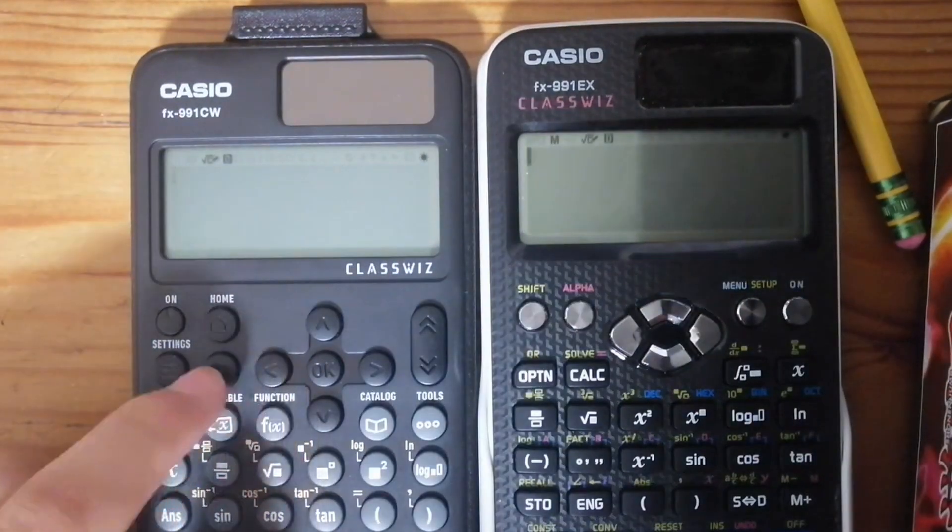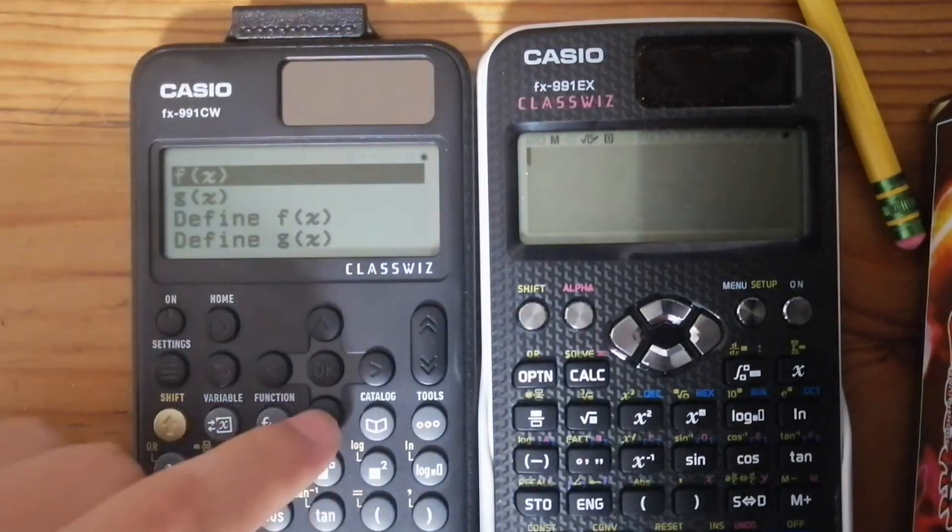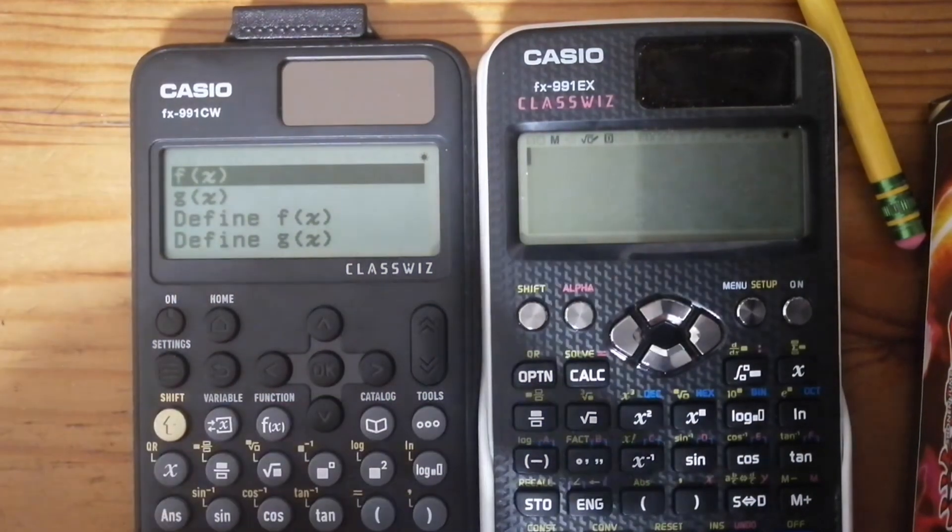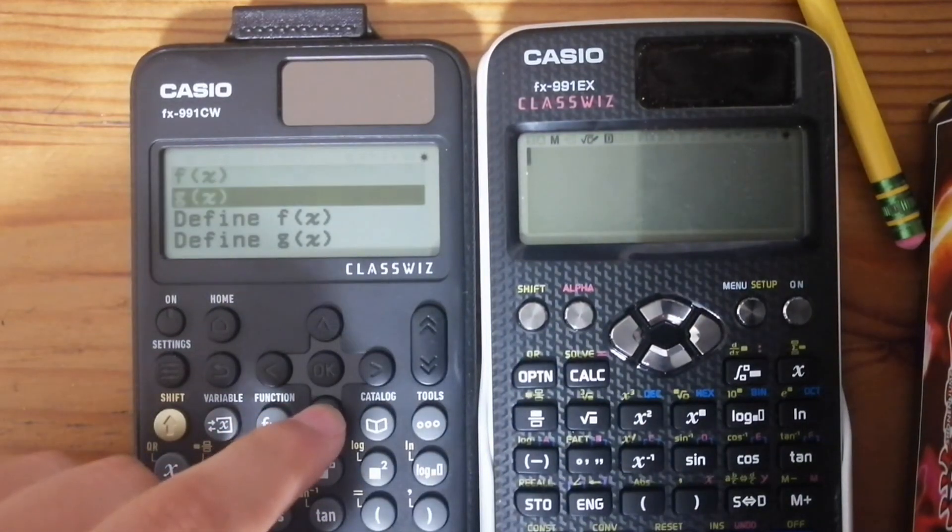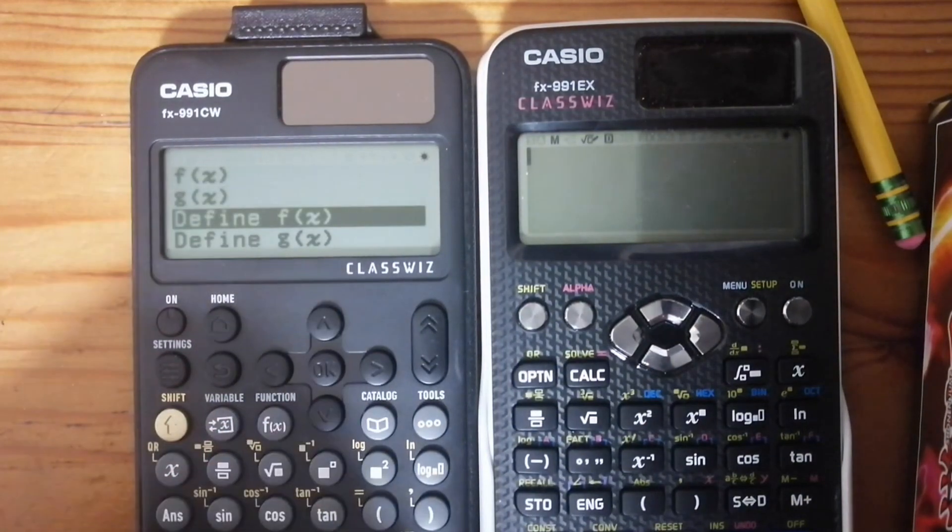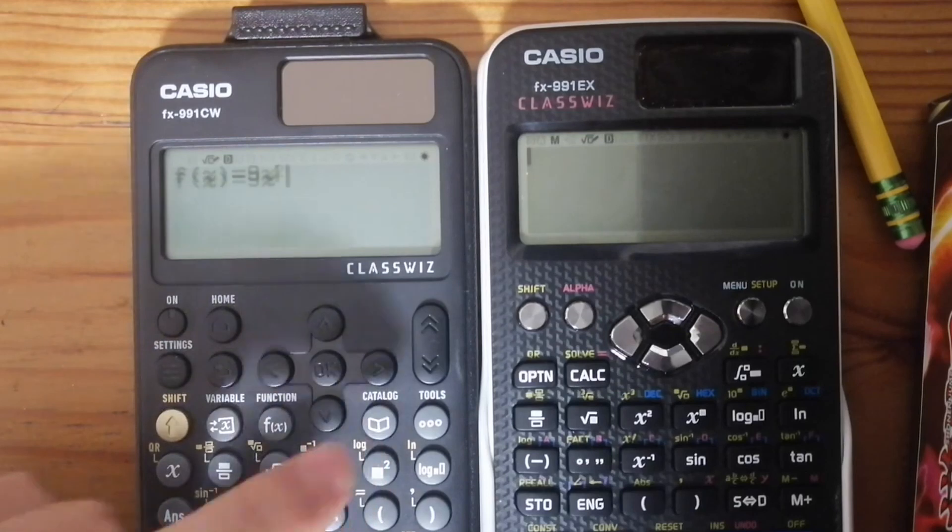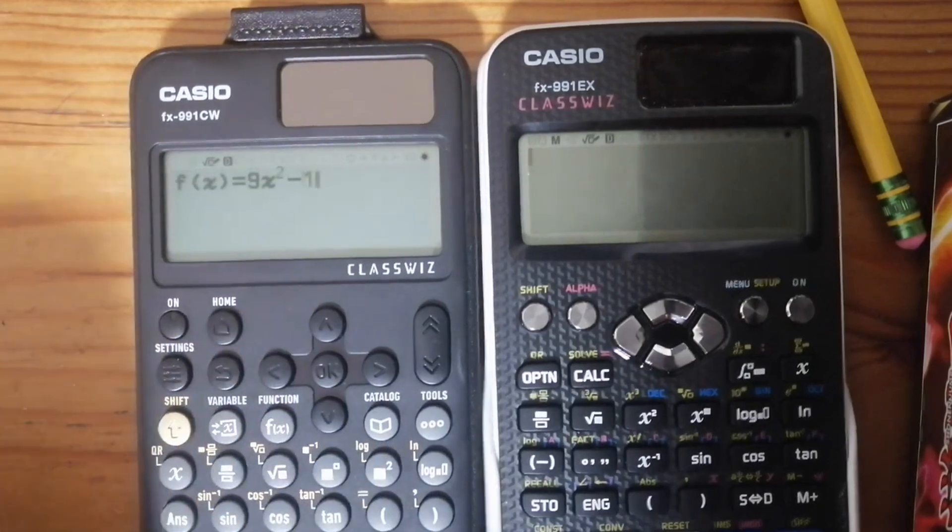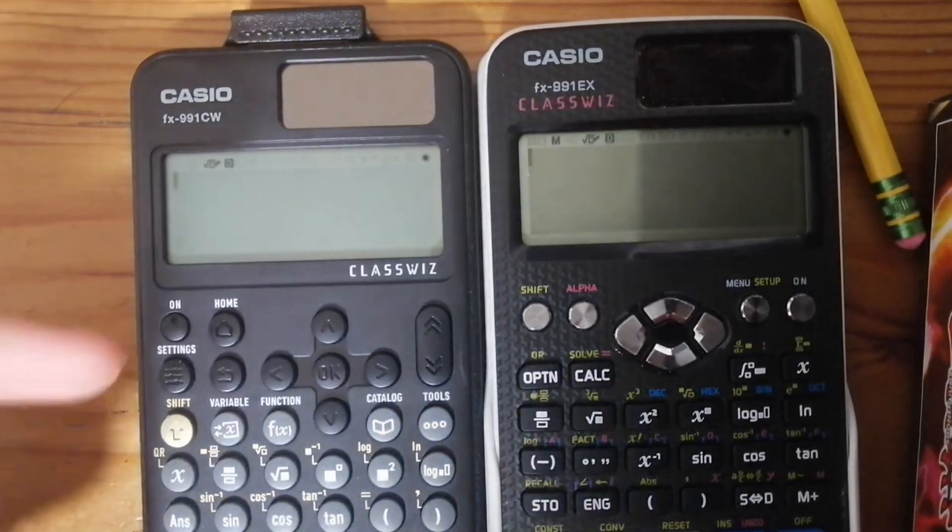So the next one is this new button here also called function. And I think this is the coolest feature on the CW that isn't on the EX. So here, you can store two functions in memory. So you have f of x and g of x. And you can actually define these to whatever you want. So here, I can define f of x, let's say, 9x squared minus 10. And now every time I want to actually use it, I can just go here,